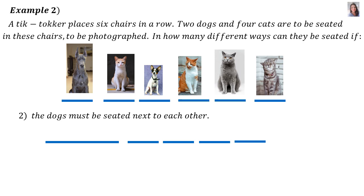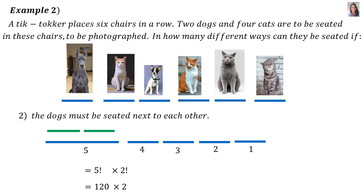Now, the dogs have to sit next to each other, so suddenly there is only one space for the dog pair. Therefore this becomes 5, 4, 3, 2, 1 for the 4 cats and that translates to 5 factorial. But remember, there are 2 dogs sitting together and grouping them together translates to 2 factorial. Therefore, 5 factorial is 120 times 2 factorial is 2, giving 240 different ways.